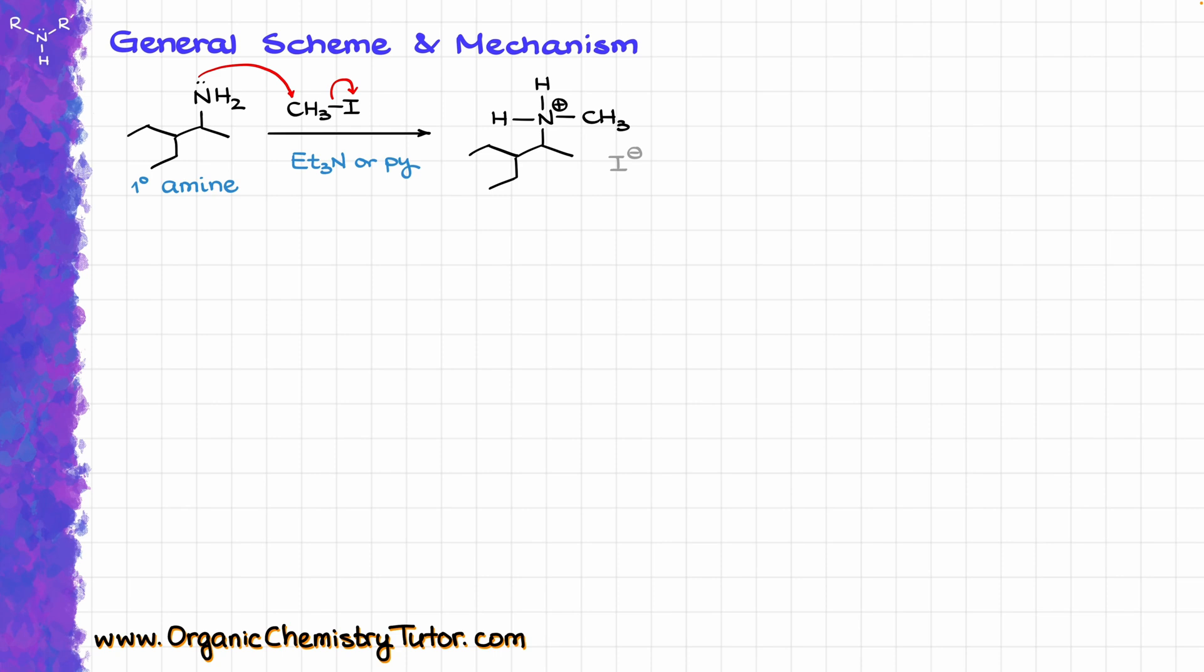Now, the reaction is typically done in the presence of a basic solvent like triethylamine or pyridine, although sometimes we don't actually write it down. The role of that solvent is to come in and deprotonate that intermediate. The nitrogen comes in, pulls that proton off, and we get a free amine.